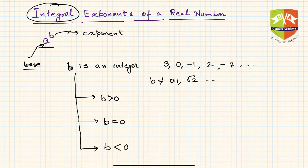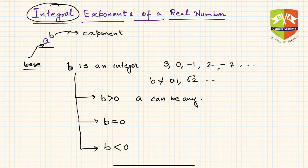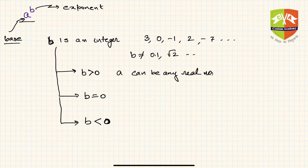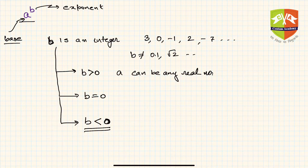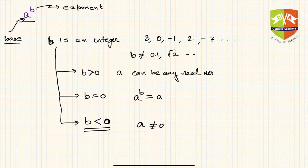If b is greater than 0, then a can be any real number. When b is less than 0, we have to take some precautions — a cannot be 0. And when b equals 0, by definition a^0 is defined as 1.